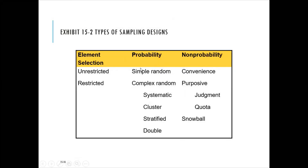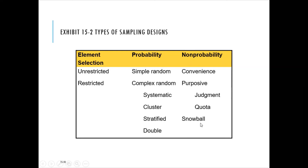Sampling is divided into probabilistic and non-probabilistic — unrestricted and restricted. Probabilistic sampling is the ideal situation, but it requires a sampling frame, which is a list of the entire population. In most cases of business research, it's not possible to get the sampling frame, so most researchers use non-probabilistic sampling.